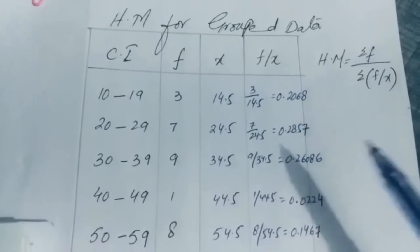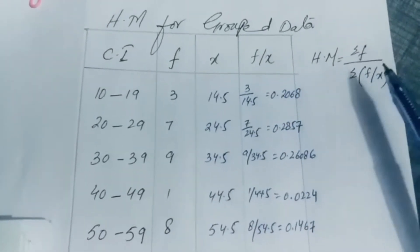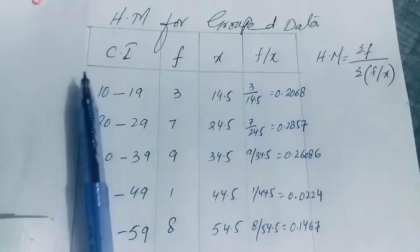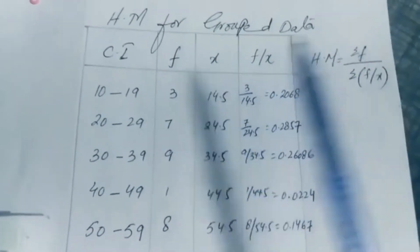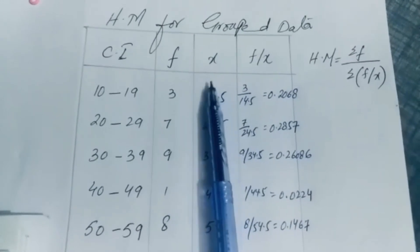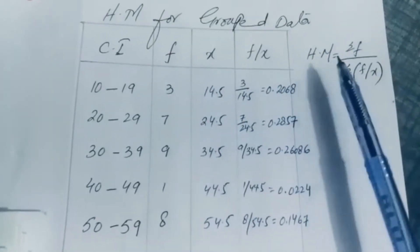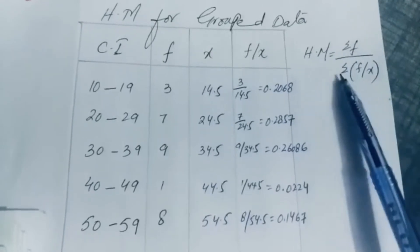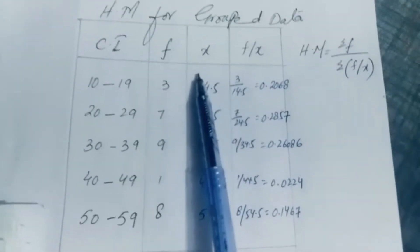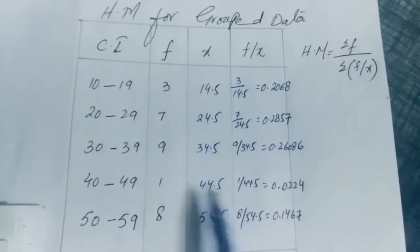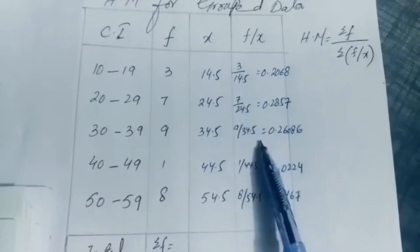In this video I will explain how to find the harmonic mean for given grouped data. Class intervals and frequencies are given, and you have to find the midpoints and f upon x. The formula for harmonic mean is summation f divided by summation of f upon x. We need to generate the midpoint and f/x columns ourselves.